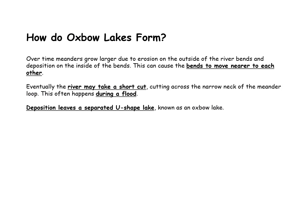Again, in an exam, what would you write? You might write something like this. Over time, meanders grow larger due to erosion on the outside of the river bends and deposition on the inside of the bends. This can cause the bends to move nearer to each other. Eventually, the river may take a short cut, cutting across the narrow neck of the meander loop. This often happens during a flood when there's more water in the channel. It just takes the short cut rather than going all the way around the meander bend. Finally, deposition leaves a separated U-shaped lake known as an oxbow lake. Sometimes these oxbow lakes will dry up, and that leaves a feature that's called a meander scar.